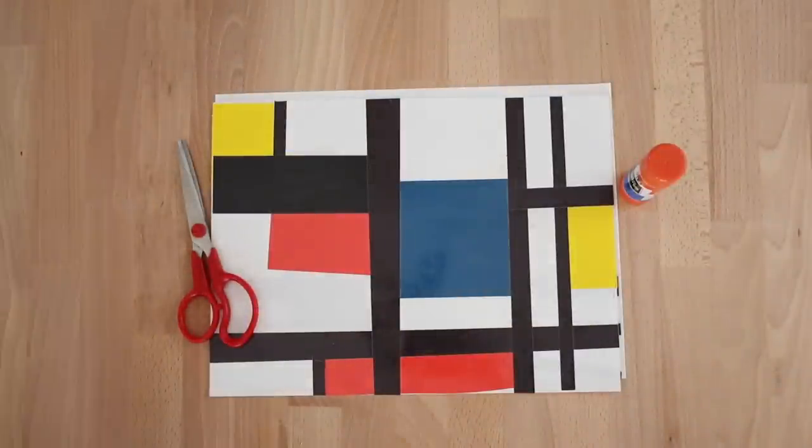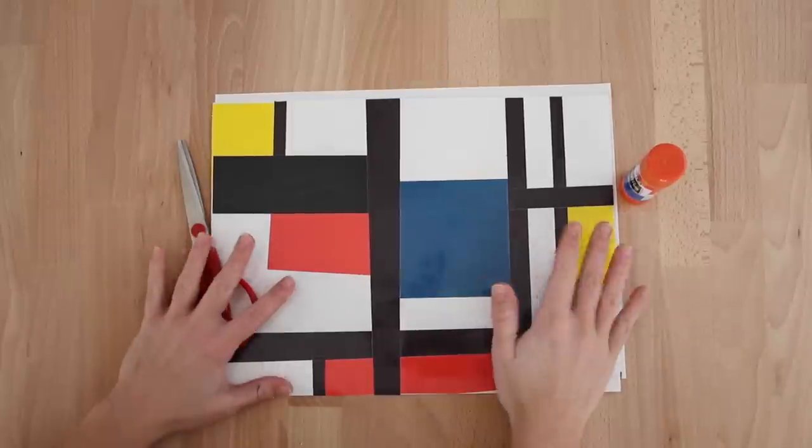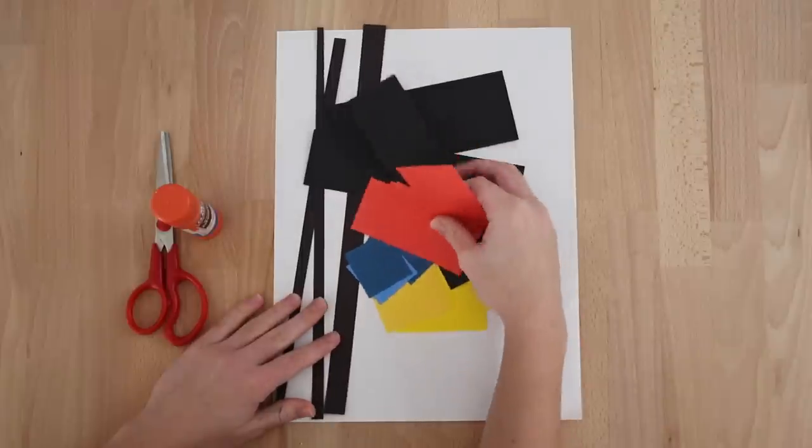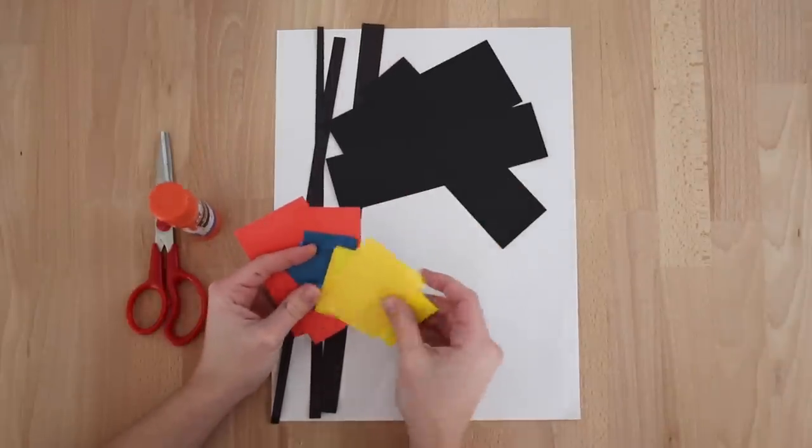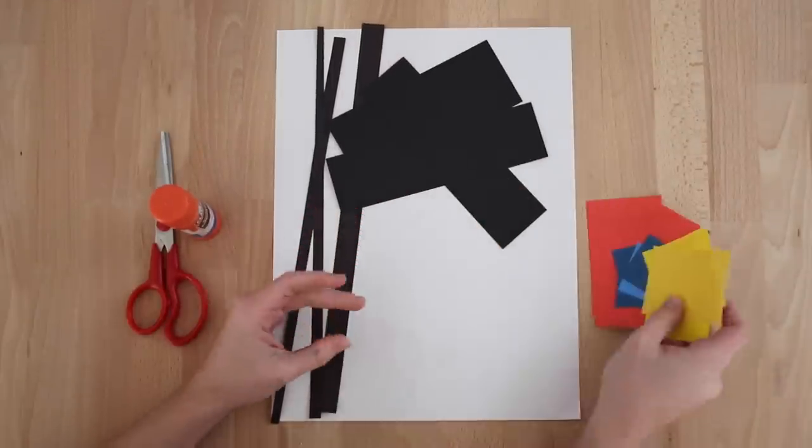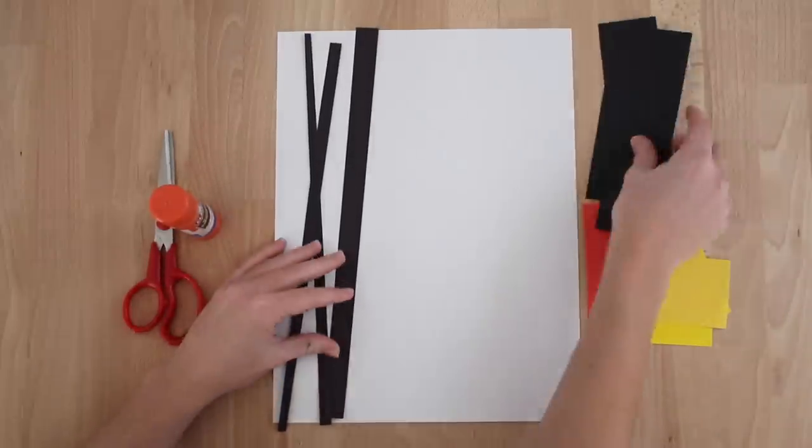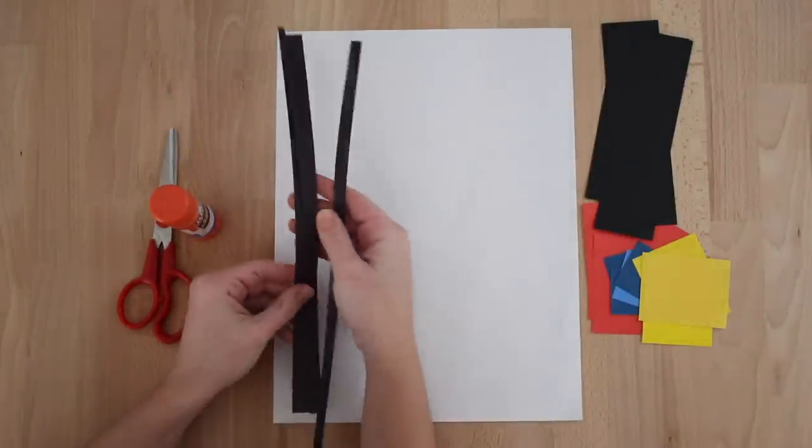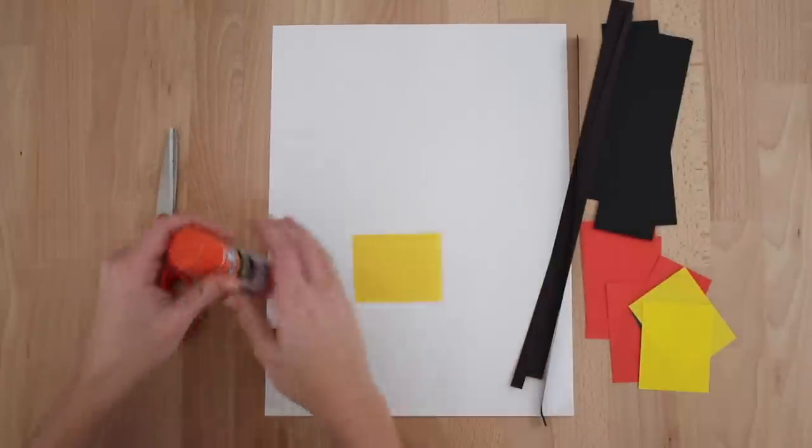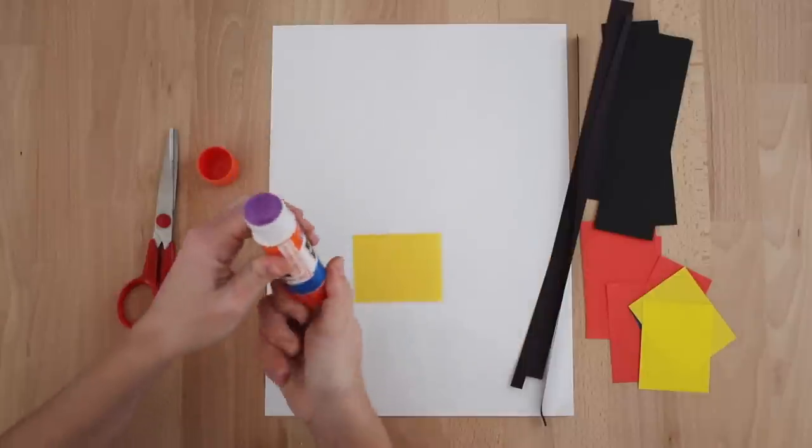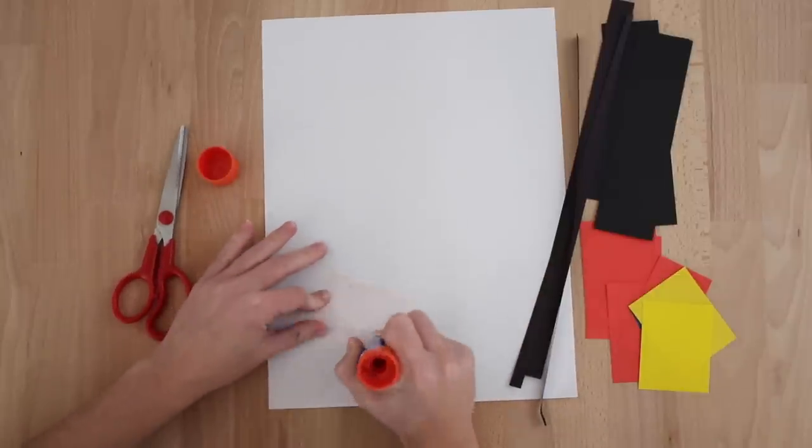Here is a finished example of a Pierre Mondrian piece of art. We will use cutouts from the three primary colors, yellow, blue, and red, and black cutouts as well. The cutouts should be rectangles and squares of various sizes. Additionally, you also need to have long strips of black paper.